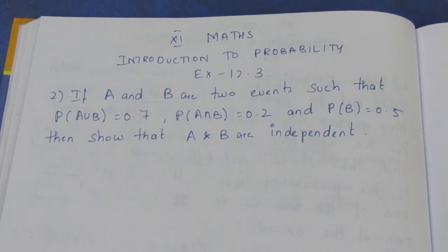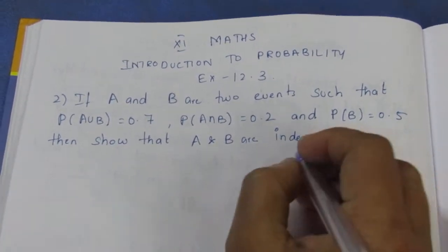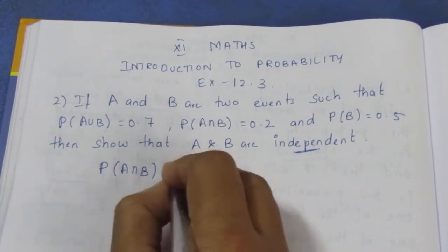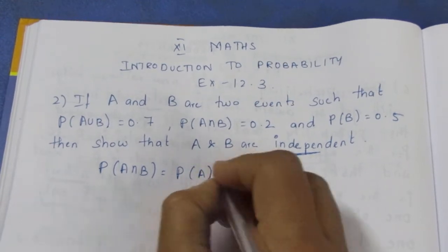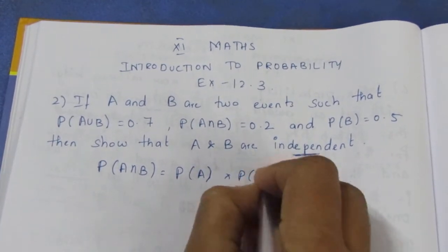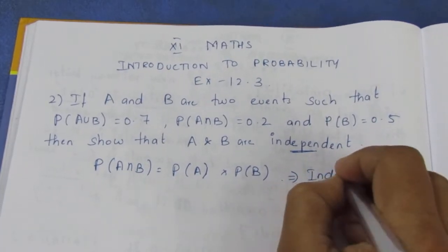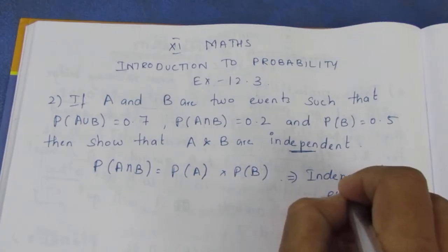Independent event means P(A∩B) = P(A) × P(B). This is the independent event formula.